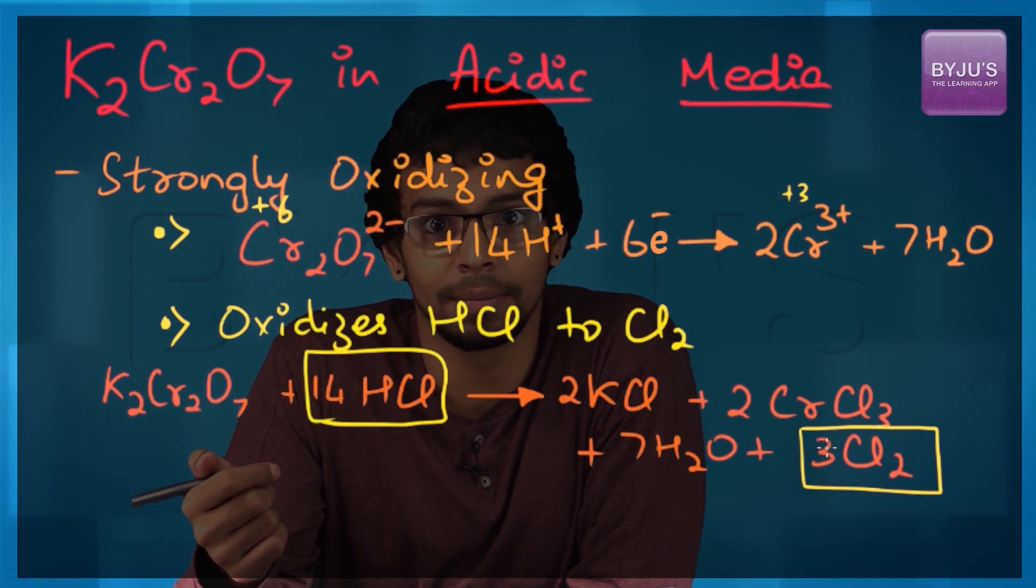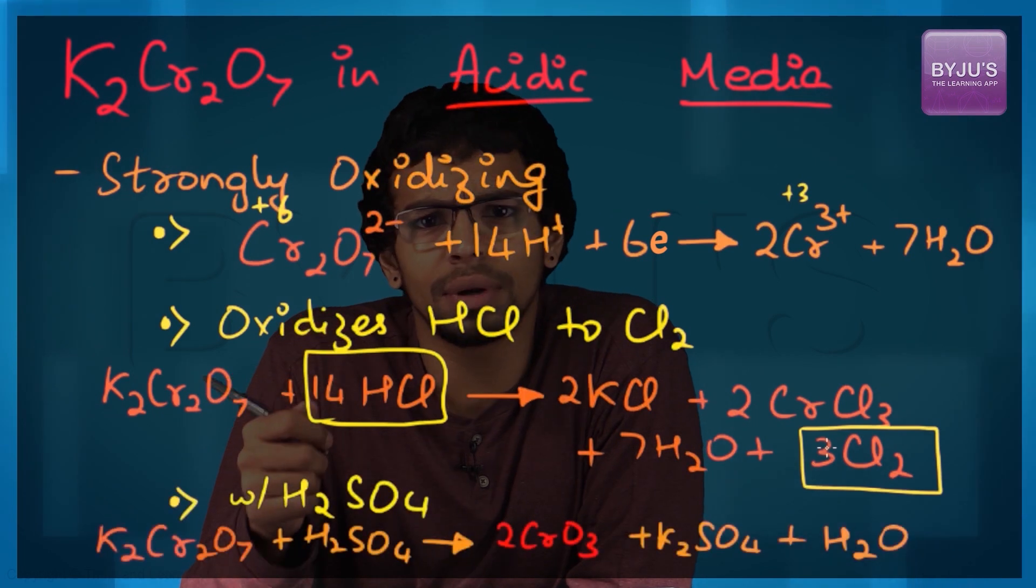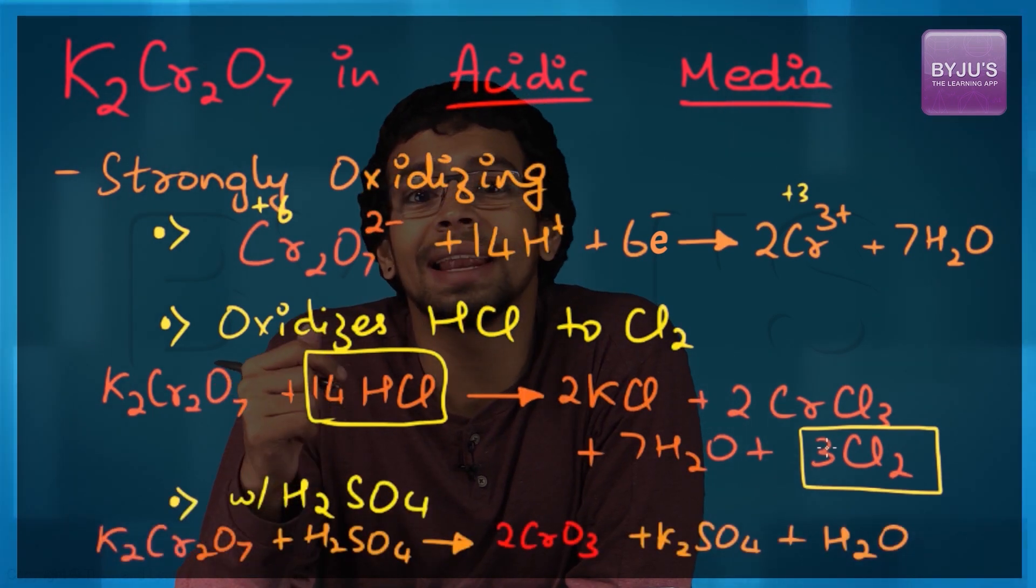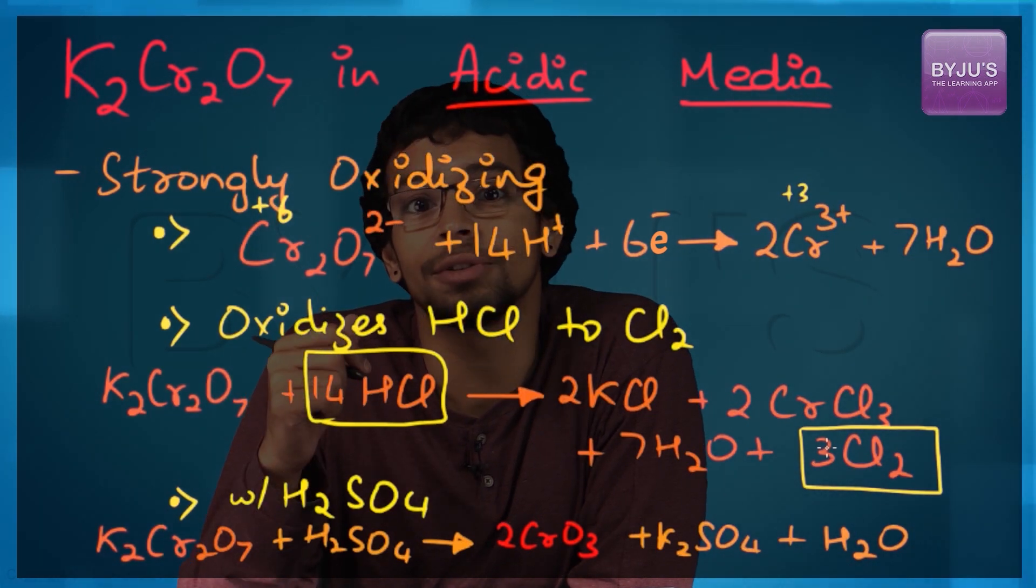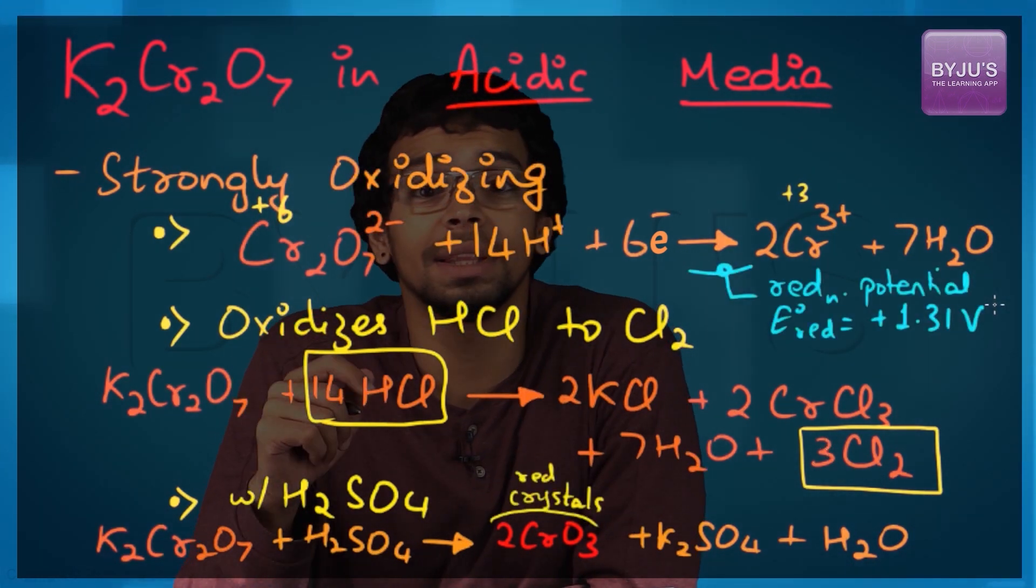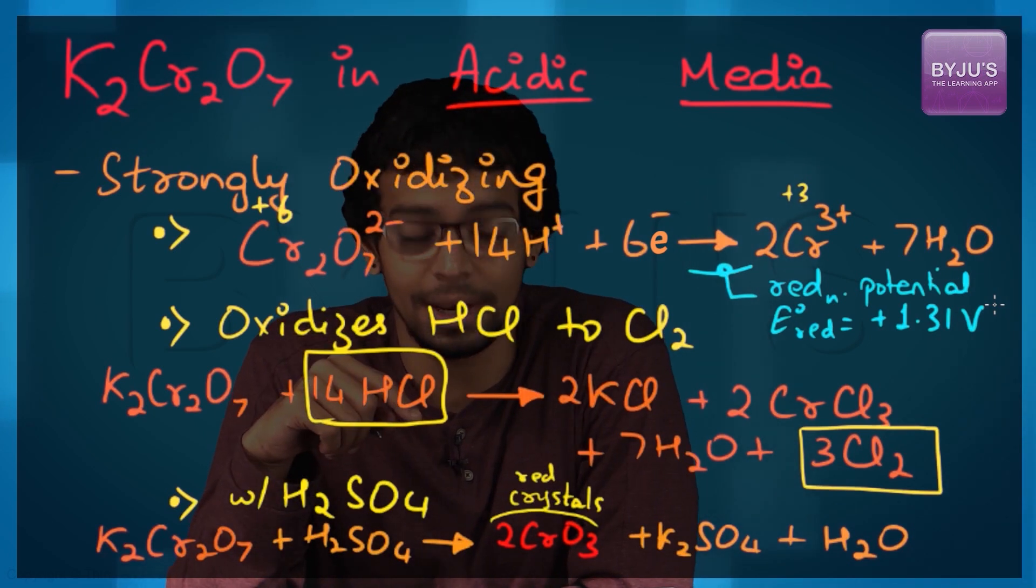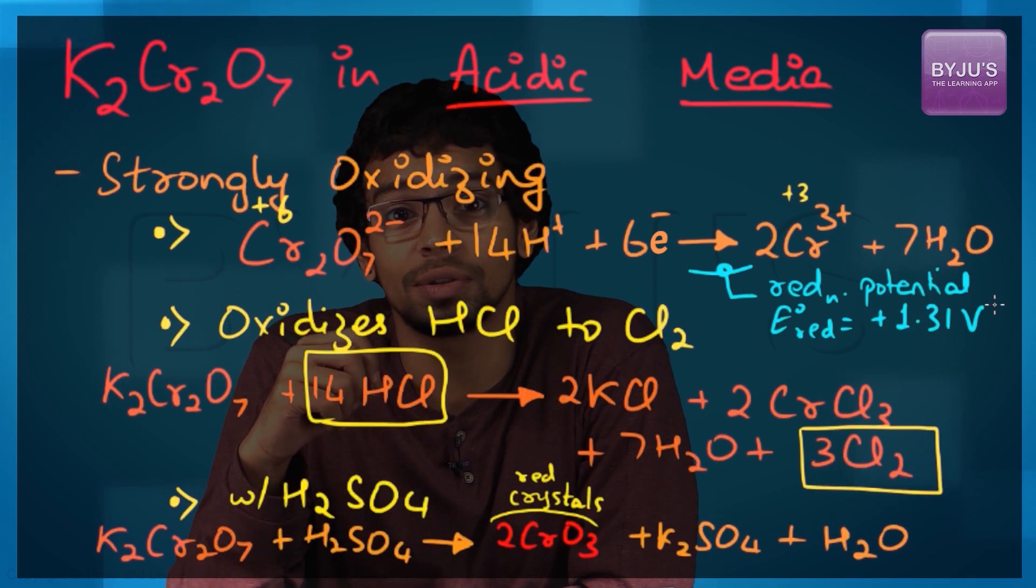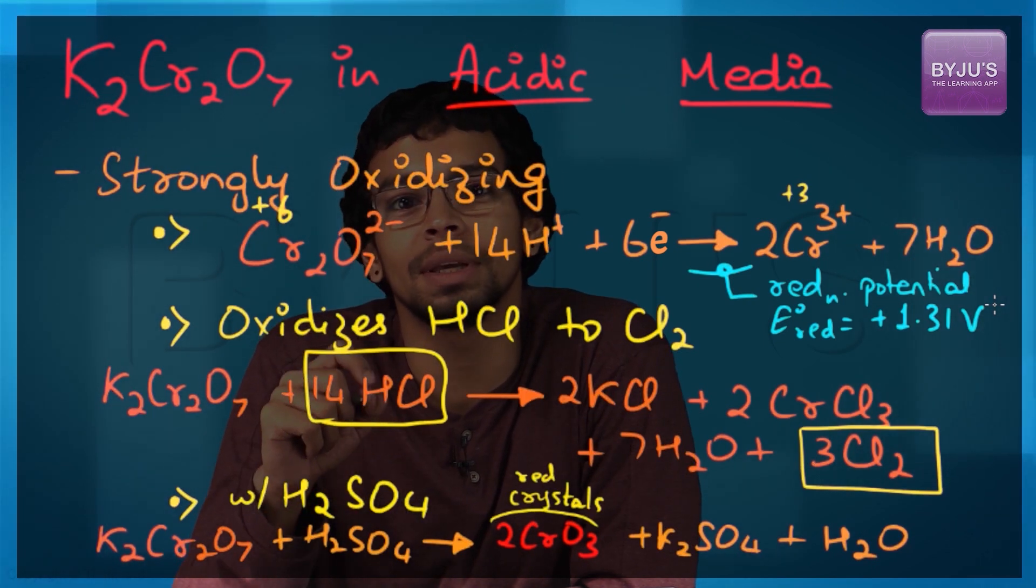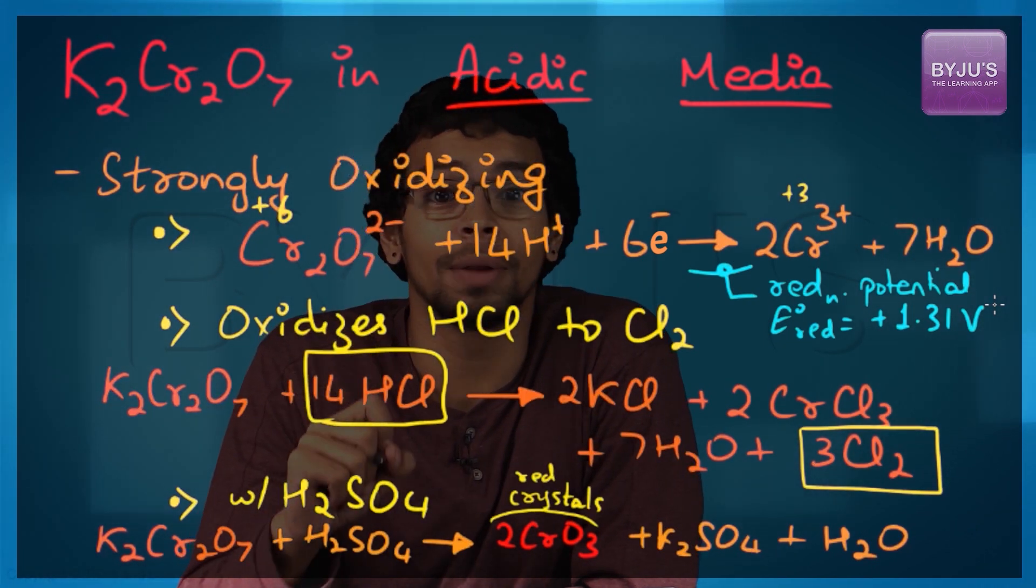With sulfuric acid, an acid anhydride CrO3, chromium trioxide, is formed as red crystals. In the oxidizing characteristic, when dichromate gets reduced, the reduction potential works out to be positive 1.31 volts.